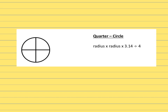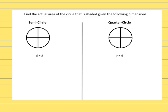The other amount of a circle we're going to look at is a quarter circle. A quarter circle is only one-fourth of the whole thing. The difference between this one and the semicircle is we're going to divide by four, because we're only shading in one of the four pieces — that's what a quarter circle means.